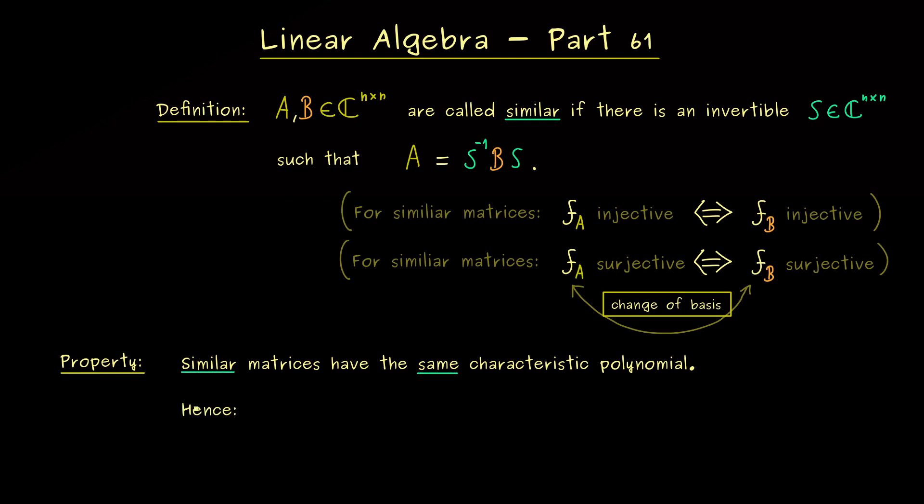Hence, what we have is, if A and B are similar, the spectrum of A and B are the same. So they have exactly the same eigenvalues and also the algebraic multiplicities are the same as well.